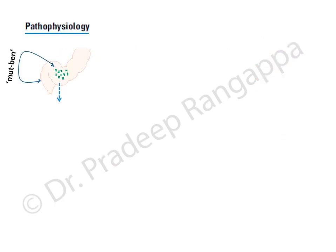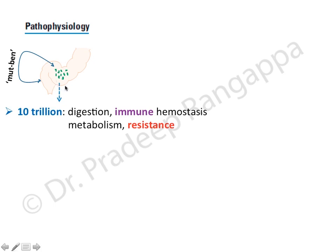The pathophysiology of ICU-acquired diarrhea involves our normal gut, which has around 10 trillion microbial flora - what we now call microbiota. This normal gut flora and the gut intestine function in tandem in a mutually beneficial way. The normal gut flora supports the integrity of the mucosal epithelium, improves host defense, and participates in digestion, immune homeostasis, metabolism, and resistance patterns.